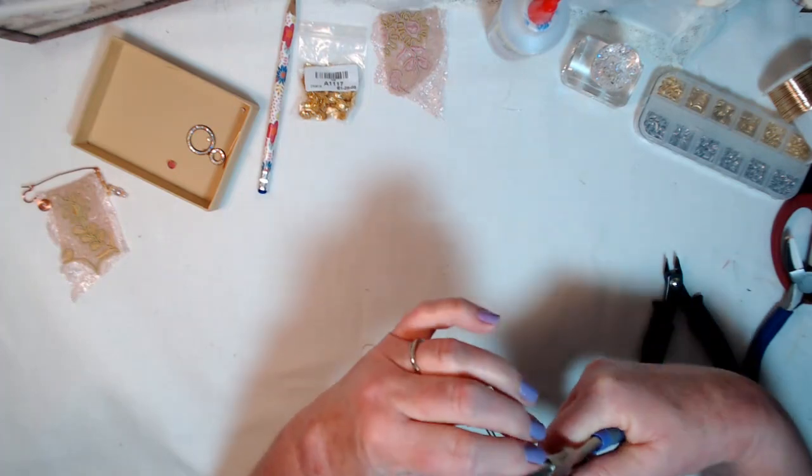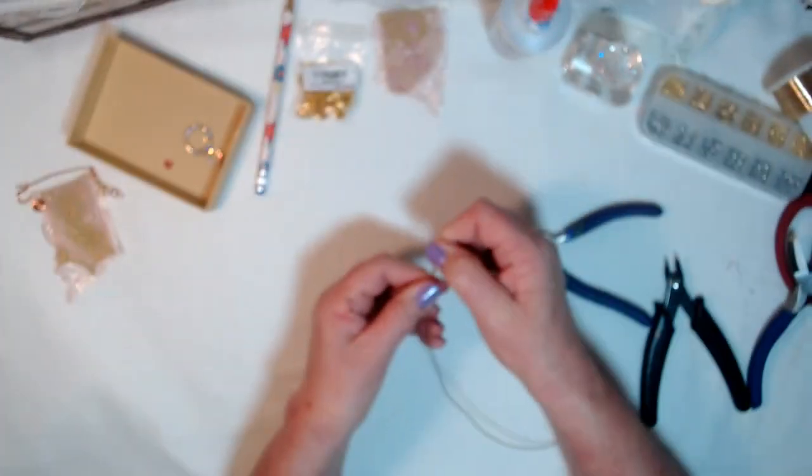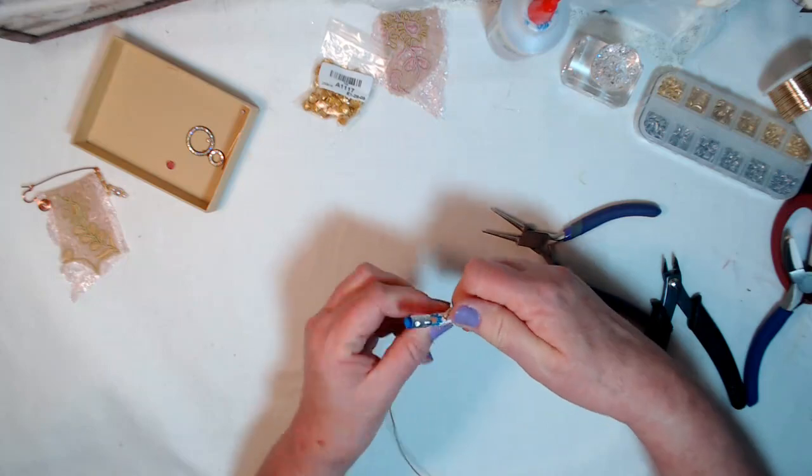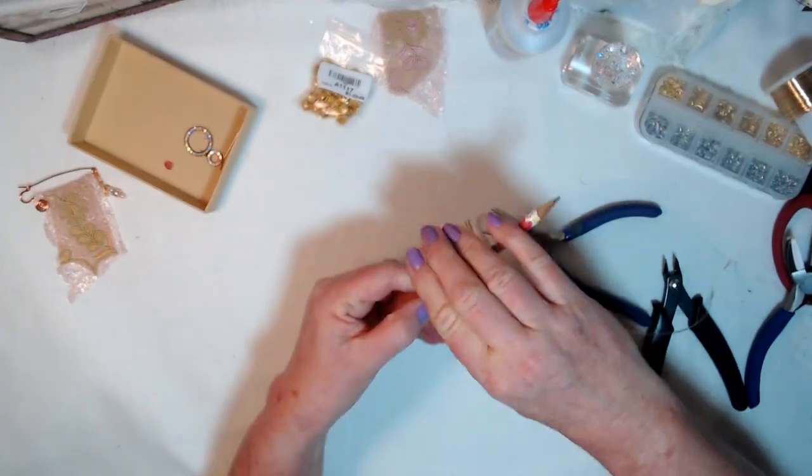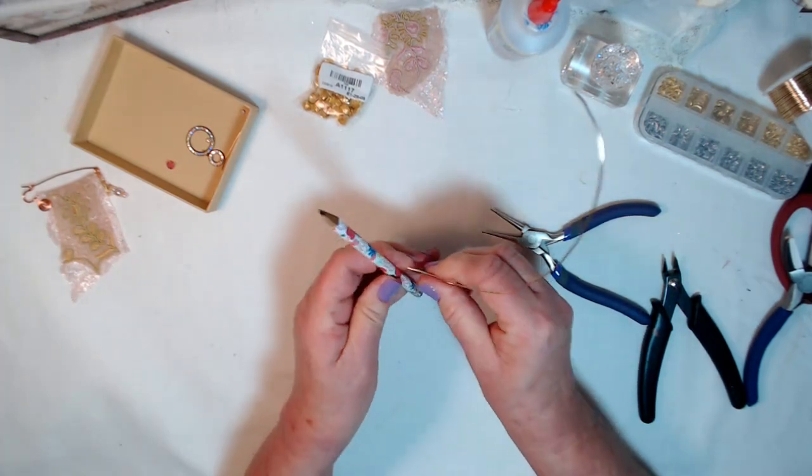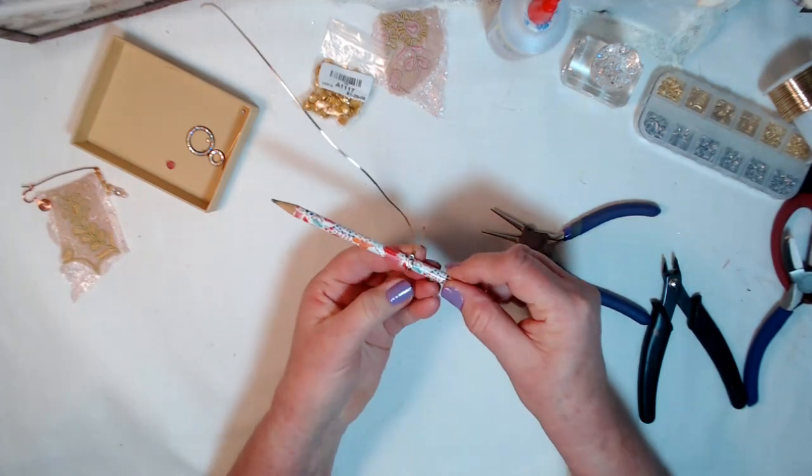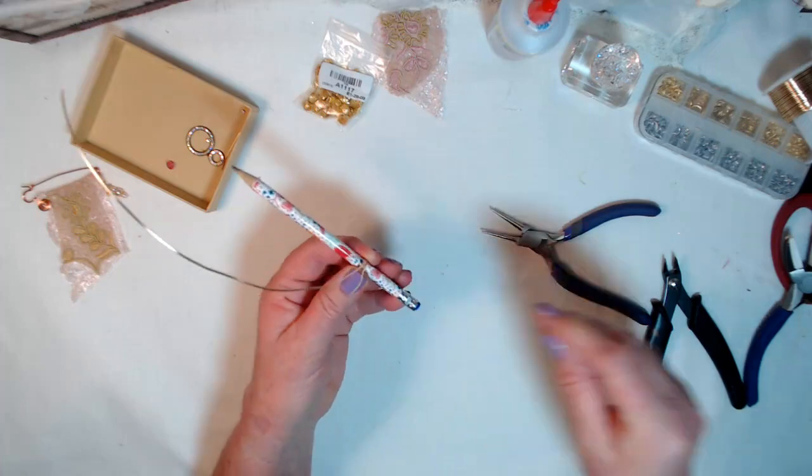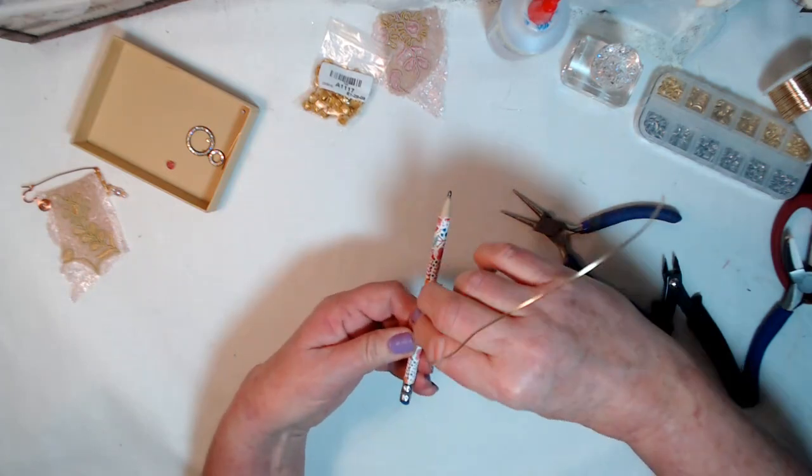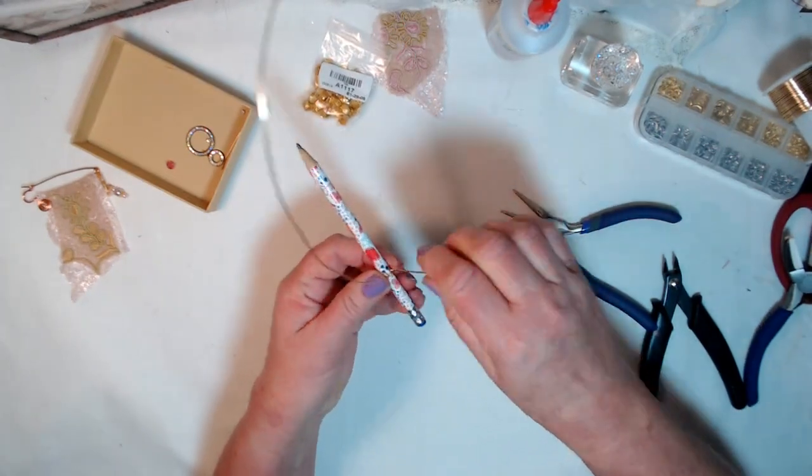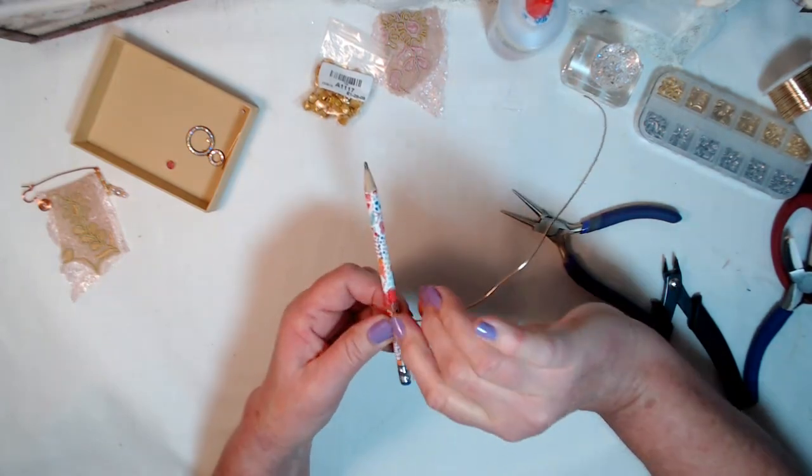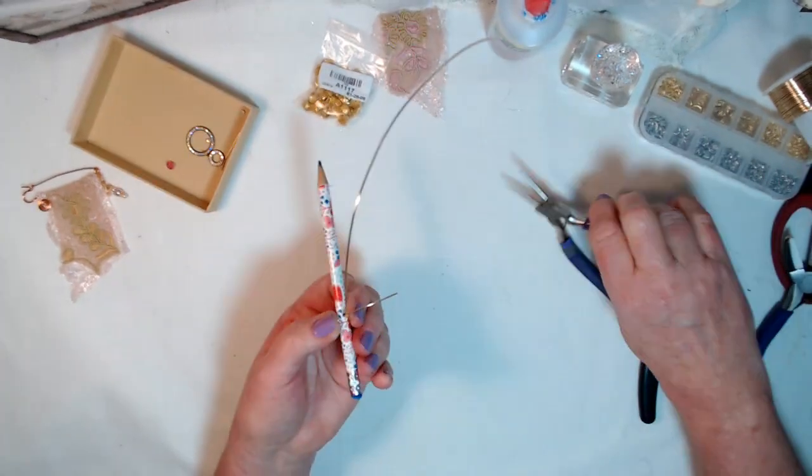You just fold your wire in half and then take something round. I use a pencil because it happens to be the size that I want my pens to be. So I just take a pencil and fold that wire around till it almost touches. And then I'm going to take one piece of the wire and fold it at an angle. I'm just keeping it on the pencil. It helps to keep it from messing up my little rounded circle part there for right now.